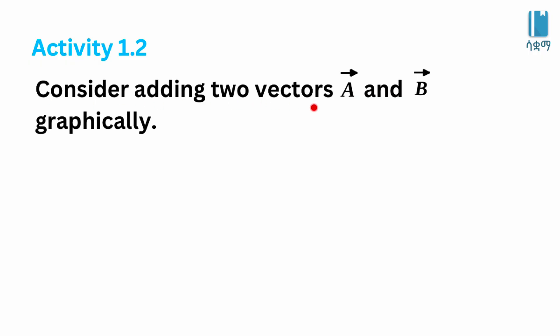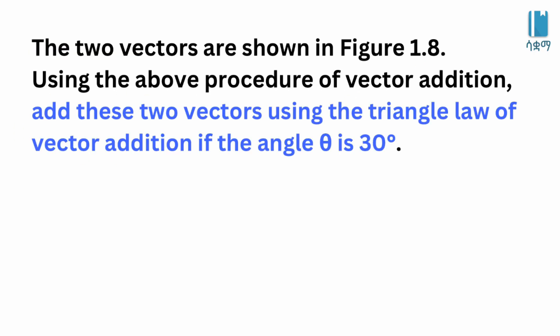Consider adding two vectors A and B graphically. The two vectors are shown in figure 1.8. Using the proper procedure of vector addition, add these two vectors using the triangle law of vector addition, if the angle theta is 30 degrees.